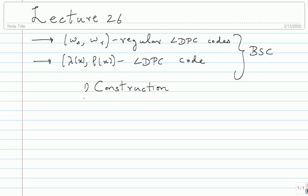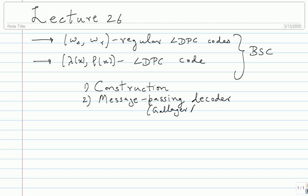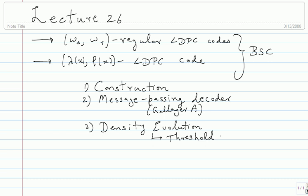Construction is one thing we saw, and then we saw message passing decoding. We saw just one example of message passing decoding which is the Gallager A decoder. There are other message passing decoders, slightly more complicated — instead of the bit-to-check processing there can be some changes. For all of these message passing decoders we saw density evolution, and this gave us the threshold property which was very interesting.